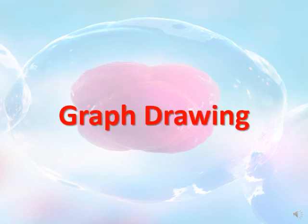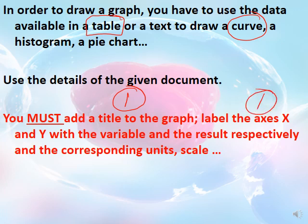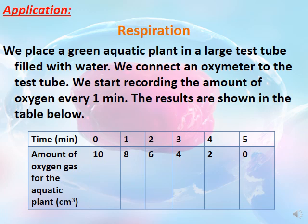Now let's do a quick revision on graph drawing. To draw a graph, you use the data available in a table or text to draw a curve. This year you only need to draw a curve. Important steps: add a title for the graph, label the x-axis with the variable and the y-axis with the results, include units, and set a scale. For example, in an application where a green aquatic plant is placed in a test tube filled with water connected to an oximeter to measure the amount of oxygen gas.